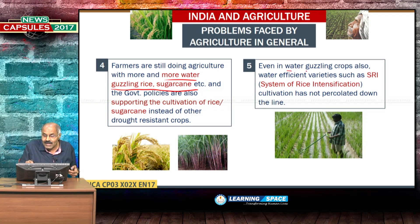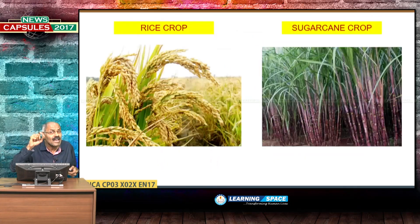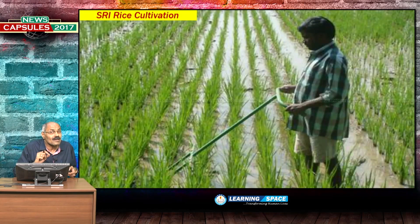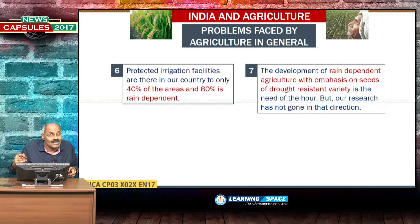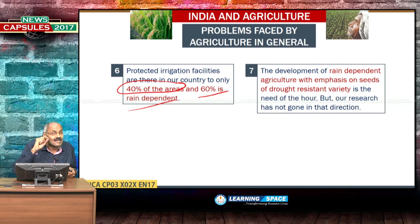Even in water-guzzling crops like rice, there are innovations. One example is the System of Rice Intensification (SRI), which is highly water-efficient, but this cultivation has not percolated down the line. We are concentrating on traditional conventional rice crop instead of SRI, which requires less water. Protected irrigation facilities are available for only 40% of areas, while 60% is rain-dependent. Government is making some effort with Pradhan Mantri Krishi Sinchayee Yojana, but this needs to be improved.